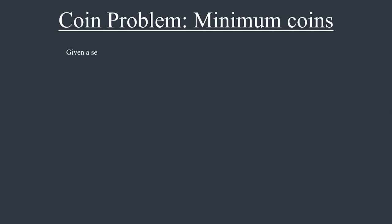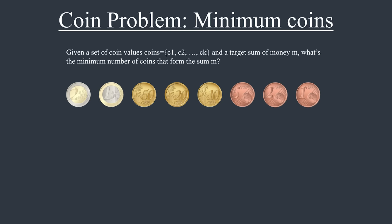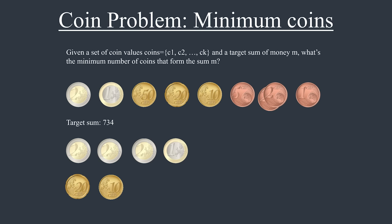Let's move on to the next problem. Given a set of coin values C1 to CK and the target amount of money M, what's the minimum number of coins that can produce the given amount? For example, let's say that we want to give a customer 734 cents in change using euro coins. Possible euro coins are 1, 2, 5, 10, 20, 50, 100, and 200 cents. The optimal solution is to select 3 coins of 200, 1 coin of 100, 1 coin of 20, 1 coin of 10, and 2 coins of 2 cents.